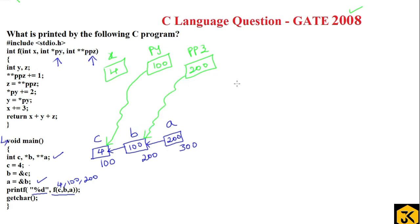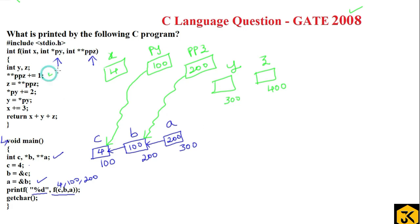Two local variables y and z are declared, with assumed addresses 300 and 400. The next statement is `**ppz += 1`, which I can rewrite as `**ppz = **ppz + 1` — this is an arithmetic assignment operation.